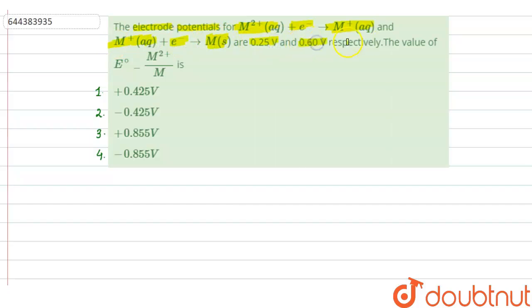0.60V respectively. The value of E⁰ for M²⁺ to M is: option 1, +0.425V; option 2, -0.425V; option 3, +0.855V; and option 4, -0.855V.